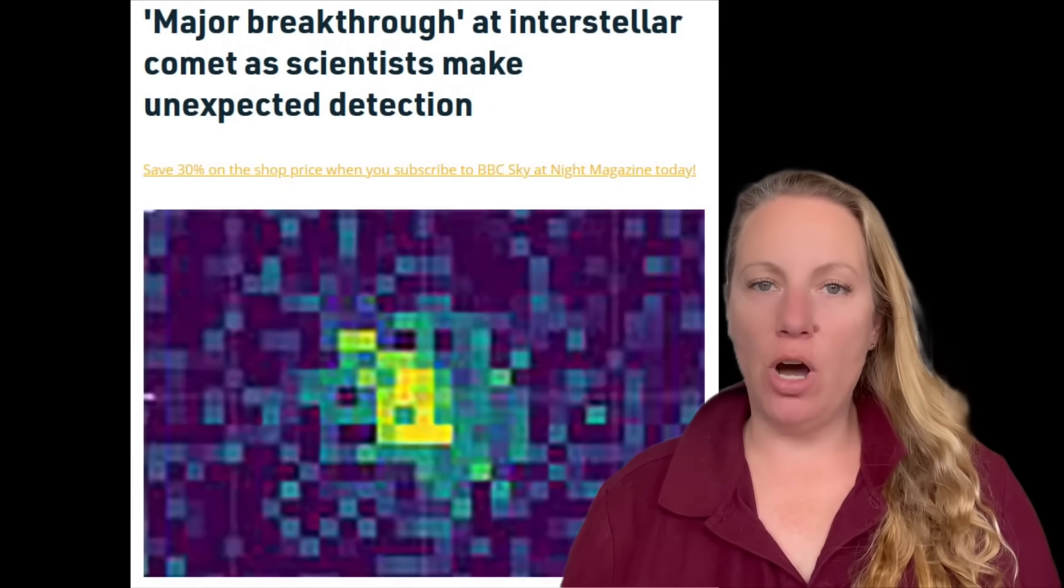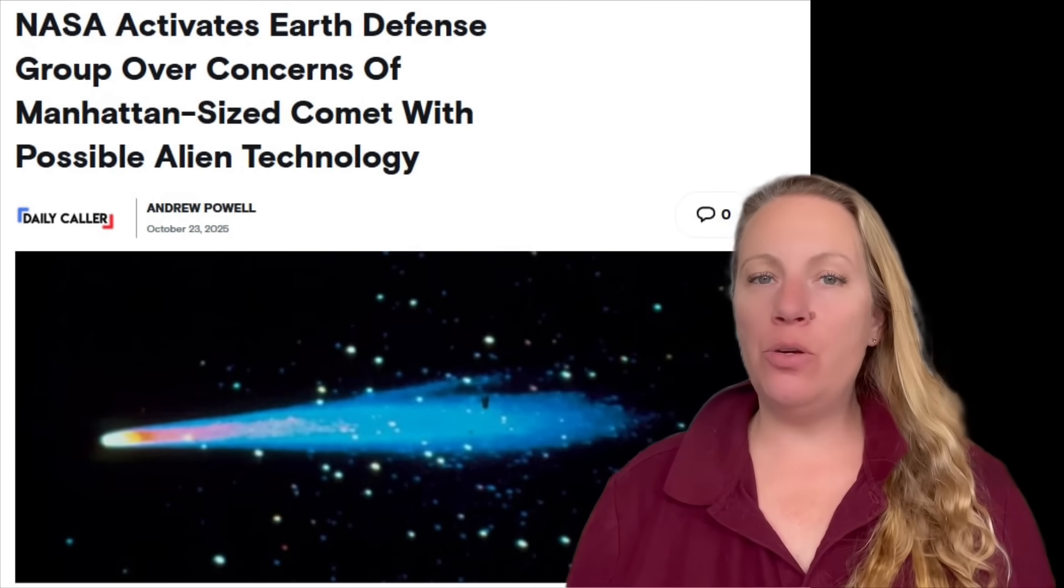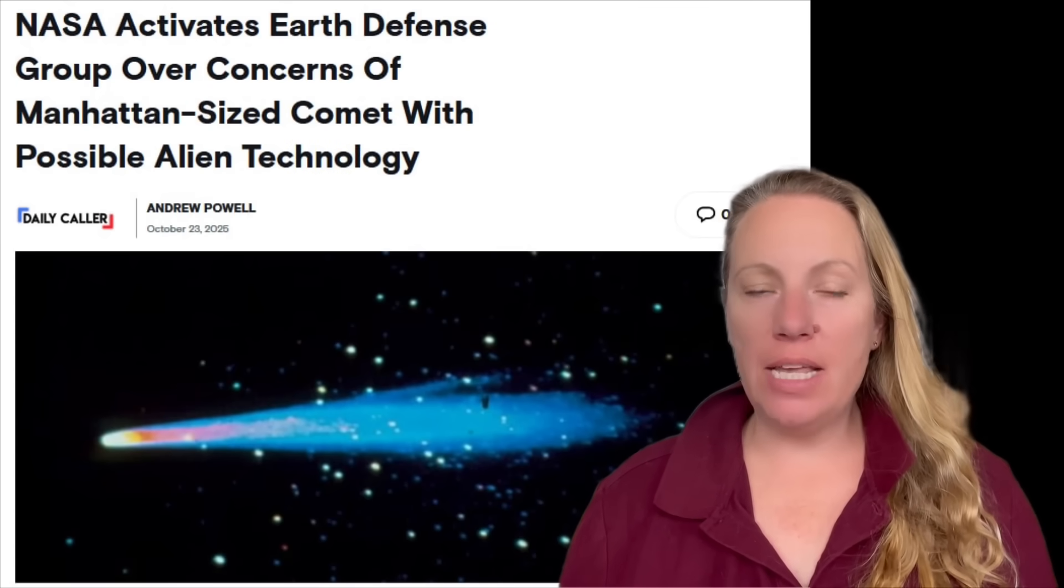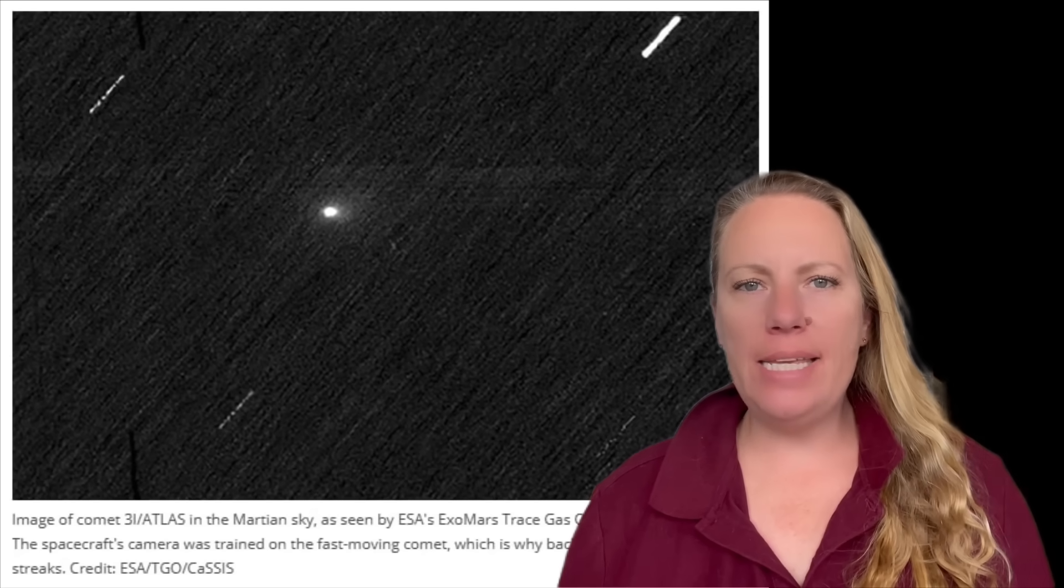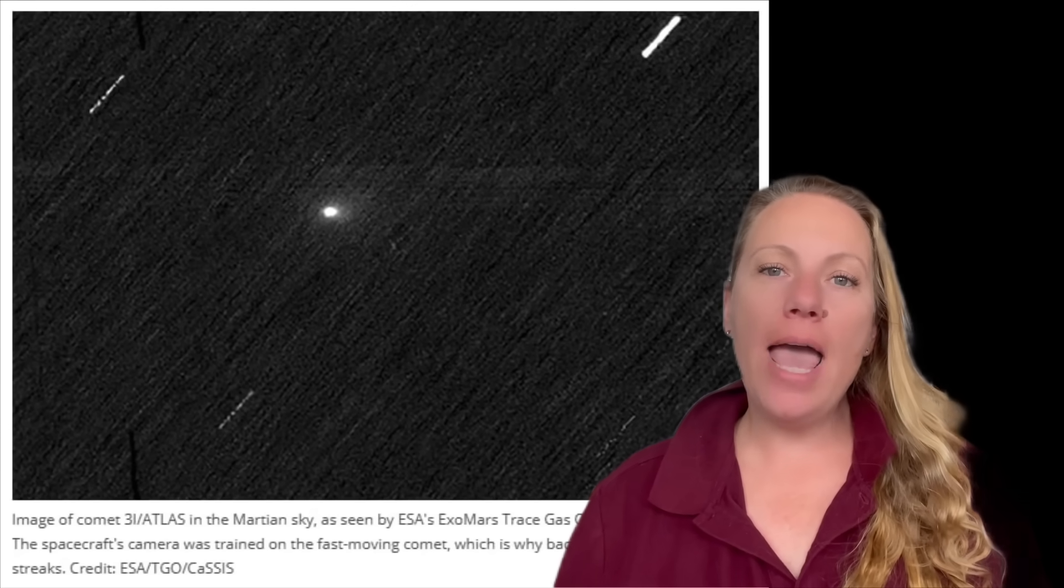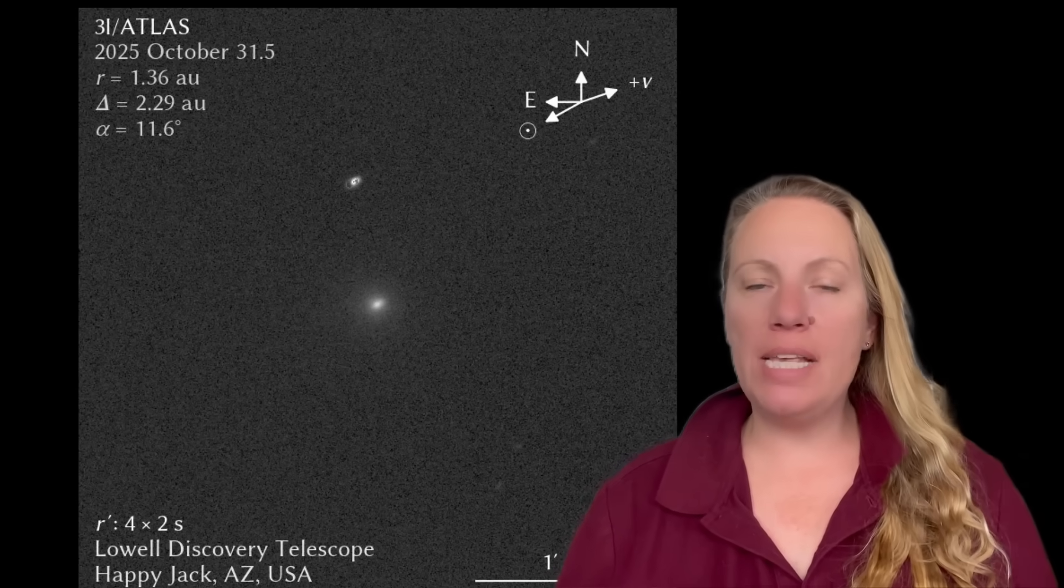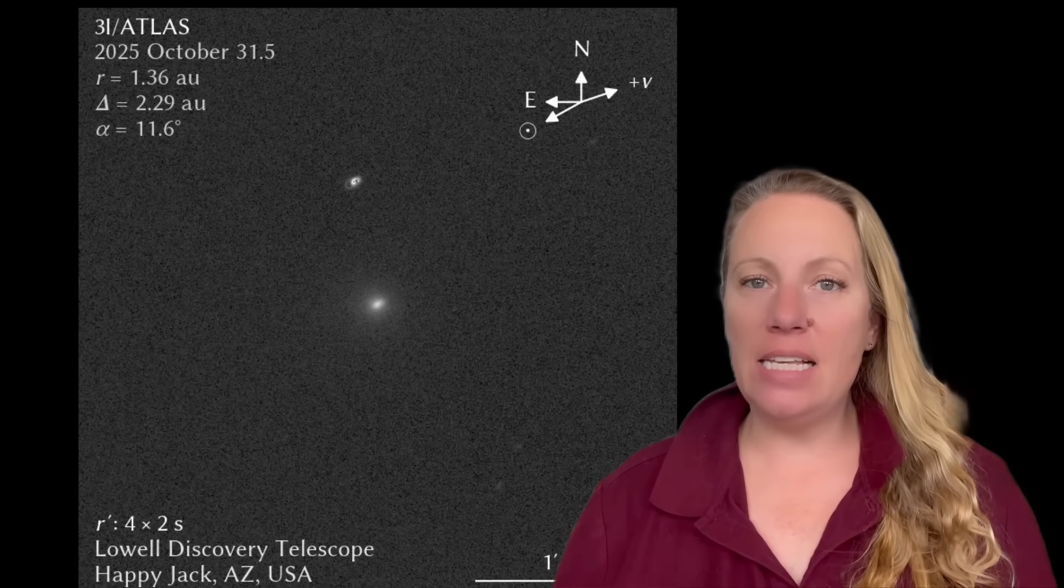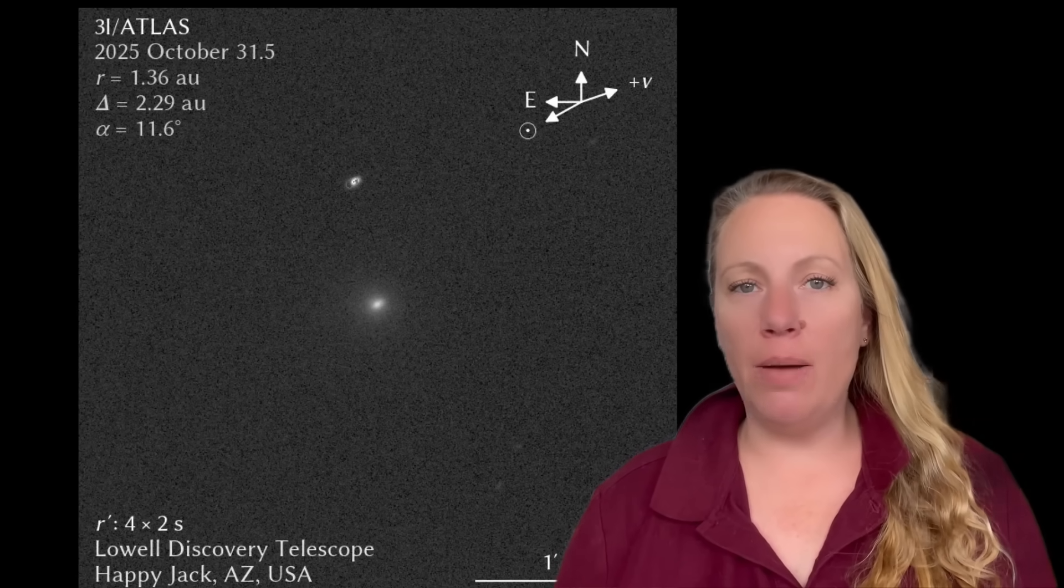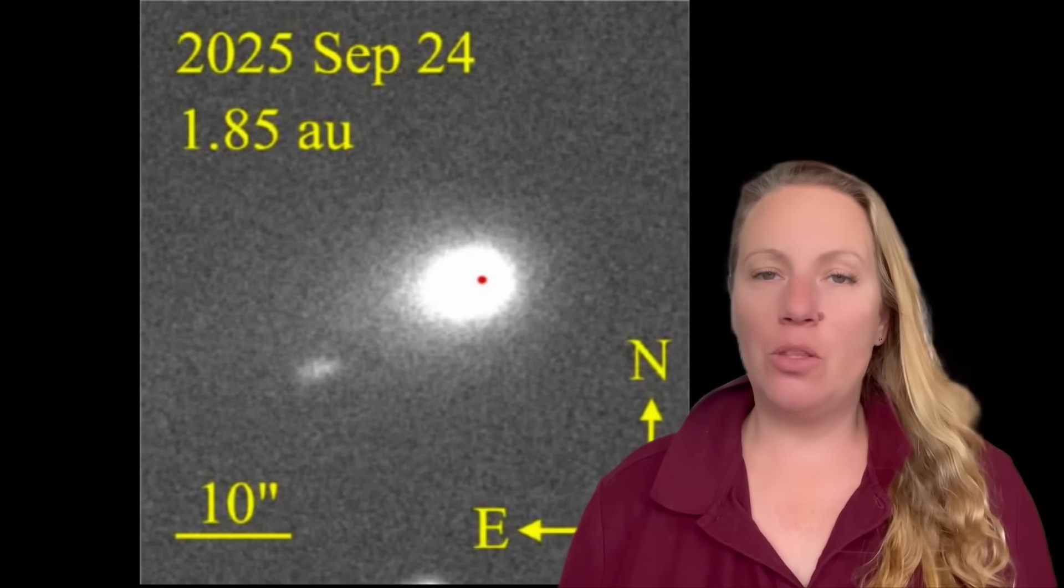I have the latest images of Interstellar Object 3i Atlas for you. They were taken on October 31st. They're brand new and not the images we're still waiting for from NASA, despite Congress now requesting their release. I have new images from the Lowell Discovery Telescope in Happy Jack, Arizona. And this is not the only amazing new detail being released about Interstellar Object slash Comet slash potential alien spaceship 3i Atlas.